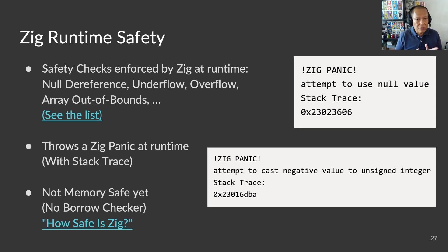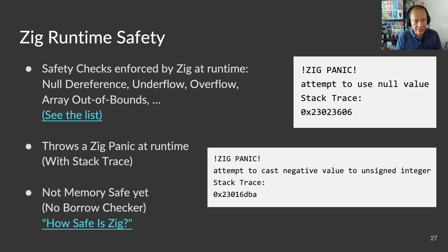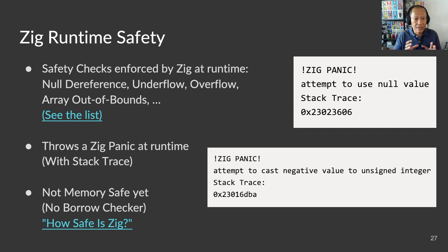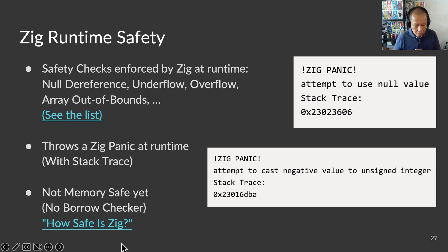Now that we have a simpler, friendlier way for our LVGL developer to build touchscreen apps, let's talk about safety. Zig performs safety checks at runtime — if we try to dereference a null pointer, or if our computation causes an underflow or overflow, or if we try to access an array beyond its bounds, all these will trigger a Zig panic followed by a helpful stack trace, which is really helpful for tracking down bugs. Zig isn't memory safe yet — it doesn't have a borrow checker for compile-time tracking. So Zig might have problems tracking heap memory, like use after free. See the article for details.